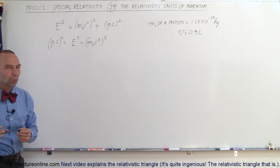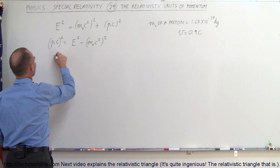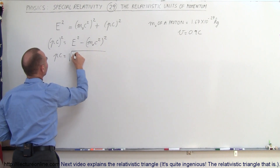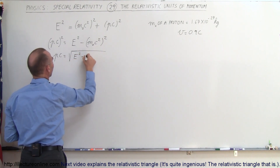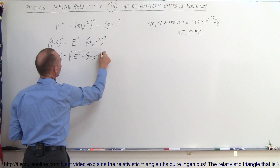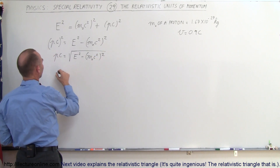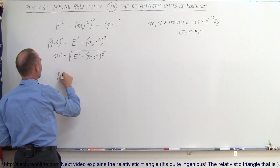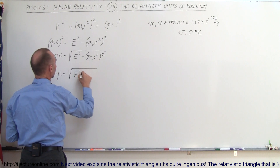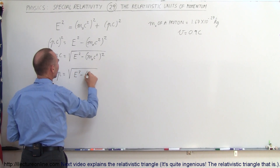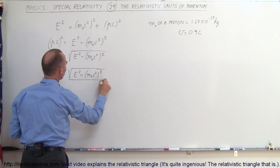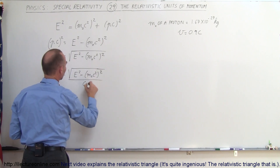Now we take the square root of both sides. So we have P times C equal to the square root of the energy squared minus the M-sub-naught C squared quantity squared. Then divide both sides by C, and we get the momentum equal to the square root of the total energy squared minus the rest mass energy squared, all divided by the speed of light.